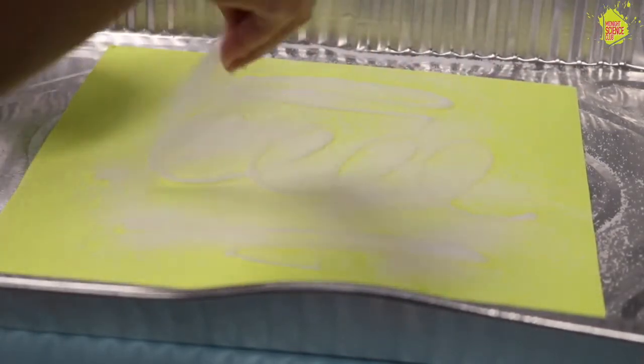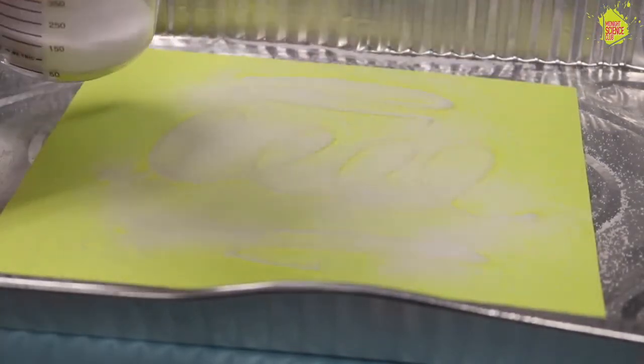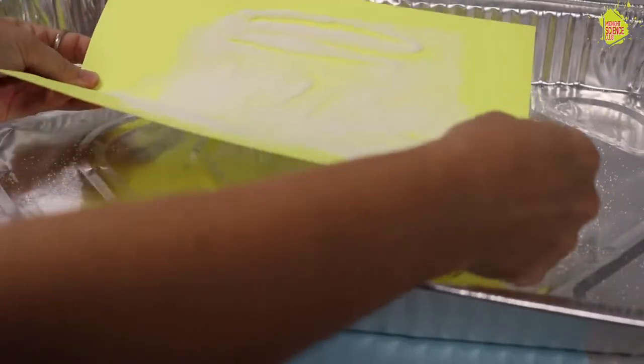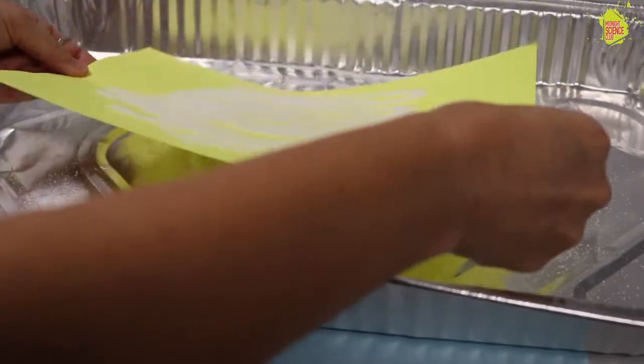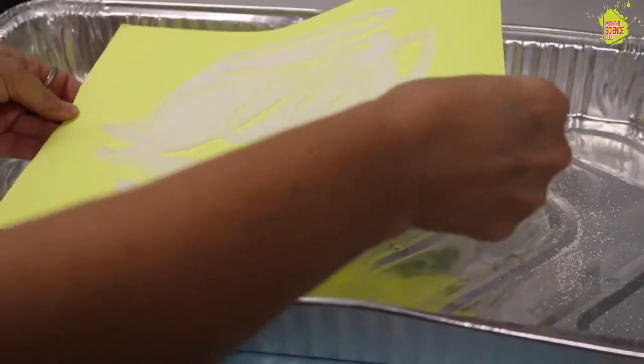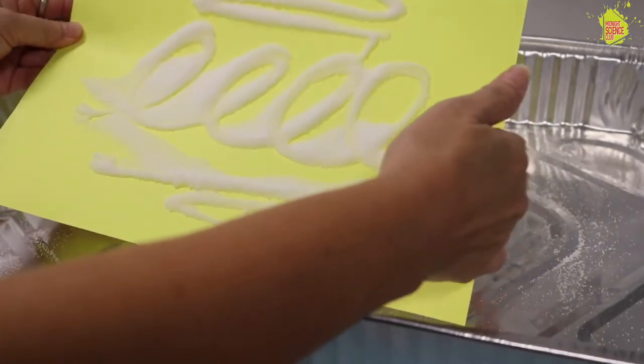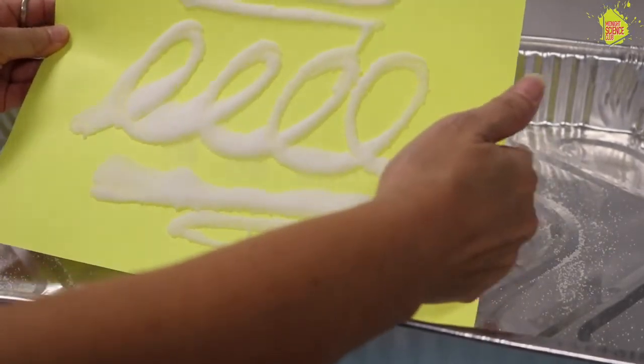And once you think you've got salt all over the glue, you can go ahead and shake it around. Tap it very gently because the glue is still wet. Shake it around, make sure there's salt all over, and then just tap it so that the excess salt comes off.